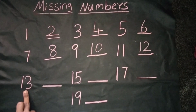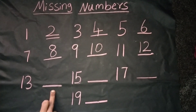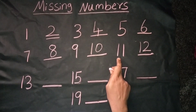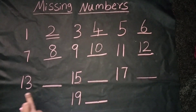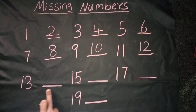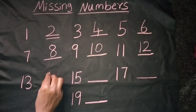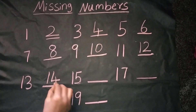We can see the number 13. The next number is — we should count from 11: 11, 12, 13, 14. Yes, it's correct. The number is 14.